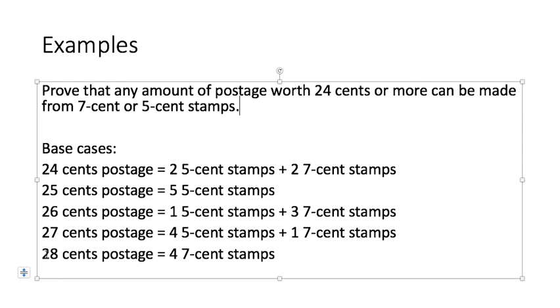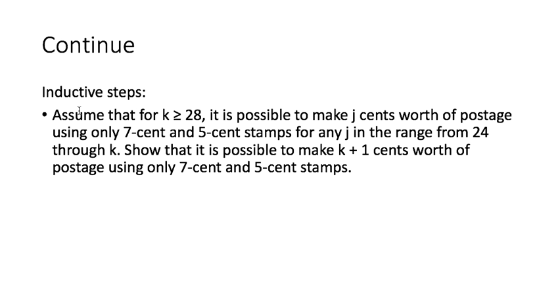Now for any n ≥ 28, if your statement is true from 24 up to k, then for k+1 what can you do? You can go back 4 cents. For 28, you can go back 4 cents, which will be 24 cents, which is still in your range. So that's the idea. So in this case, the inductive step: we assume that for k ≥ 28, it is possible to make j cents worth of postage using only 7-cent and 5-cent stamps for any j in the range from 24 through k. Under this assumption, we want to show that it is possible to make k+1 cents worth of postage using only 7-cent and 5-cent stamps.